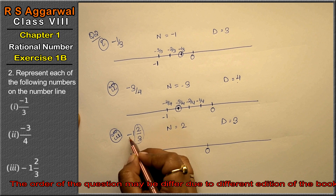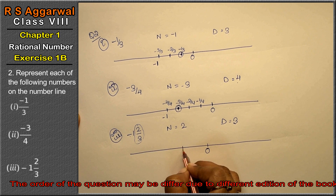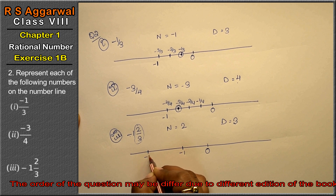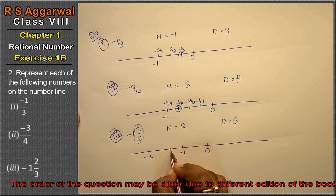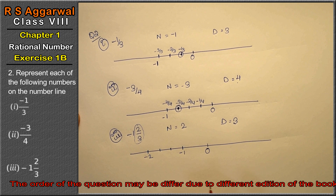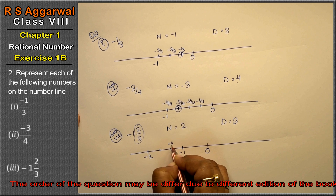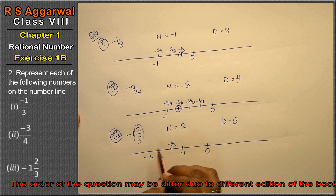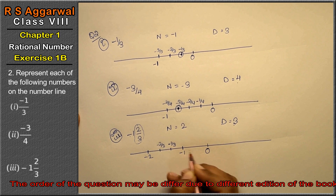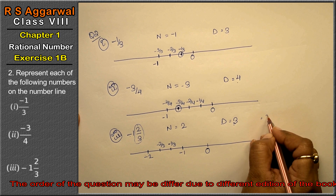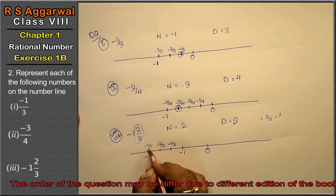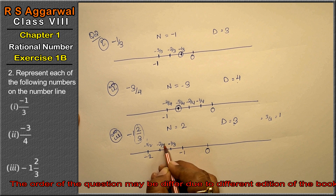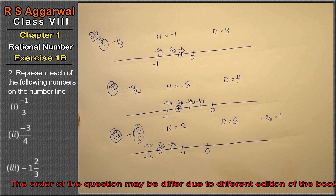Ye dekhiye: ye 0, minus 1, minus 2. Ab minus 2 ke baad 2 third - matlab 3 parts honge. 1, 2, and 3rd number is this. Ye kitna huwa - minus 1 upon 3, 3 mein se ek gaya minus 2 upon 3. Aur agar 3 upon 3 dekhein to wo firse minus 1 ho jayega. So how much is this? Minus 3 upon 3 - this is 1. So this is minus 2 upon 3 as this number.